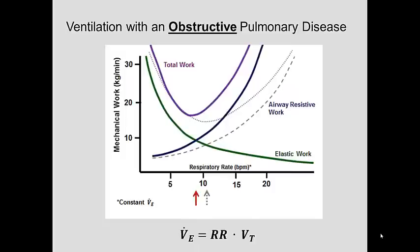Conversely, we can look at the predicted ventilation patterns in patients with an obstructive pulmonary disease. In obstructive pulmonary disease, there's greater airway resistance, which means it will take more work to move air back and forth to overcome that airway resistance. And here we see the opposite effect.